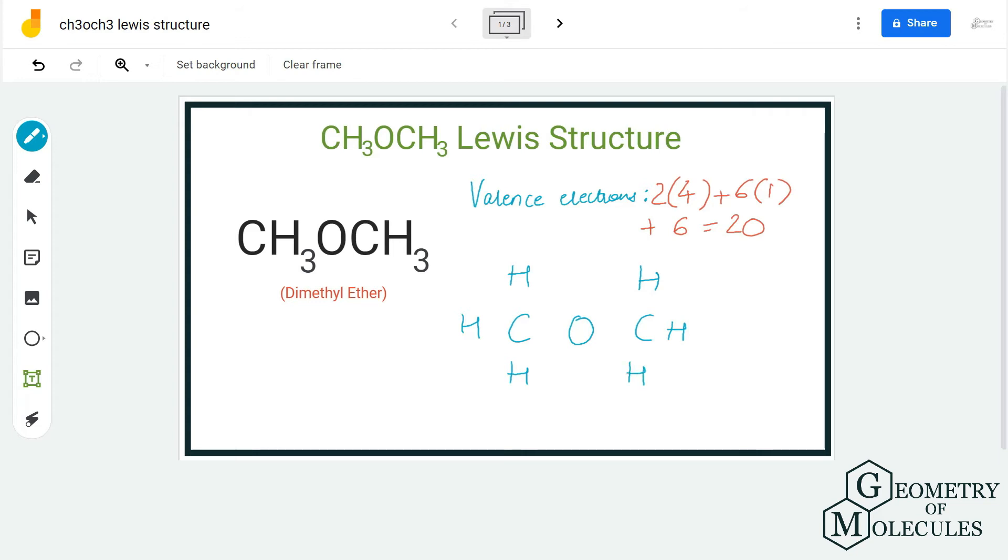Doing that, we have the arrangement of atoms. Now we shall start putting electron pairs to show the chemical bonds. Each one takes up two valence electrons, and here we are going to place a pair of electrons between carbon and hydrogen atoms, and carbon and oxygen atoms.